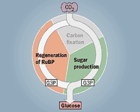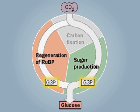One-sixth of the G3P enters reactions that make glucose and other products, and five-sixths enters a complex set of reactions, the sugar shuffle, to regenerate RUBP for the next cycle.